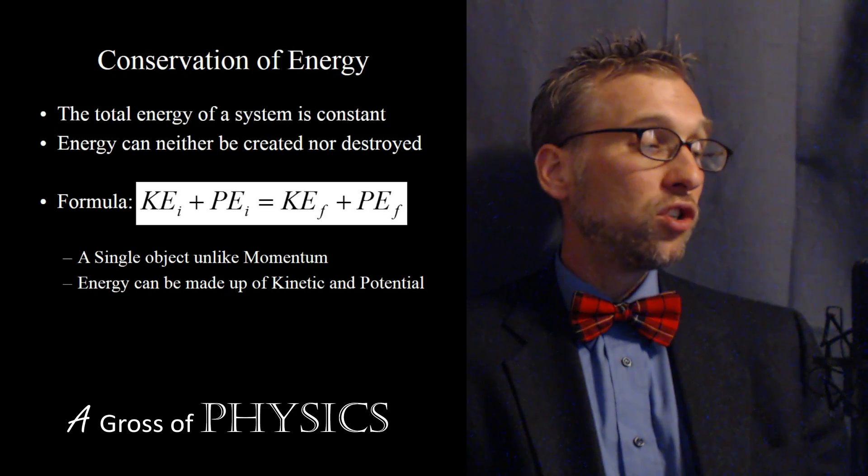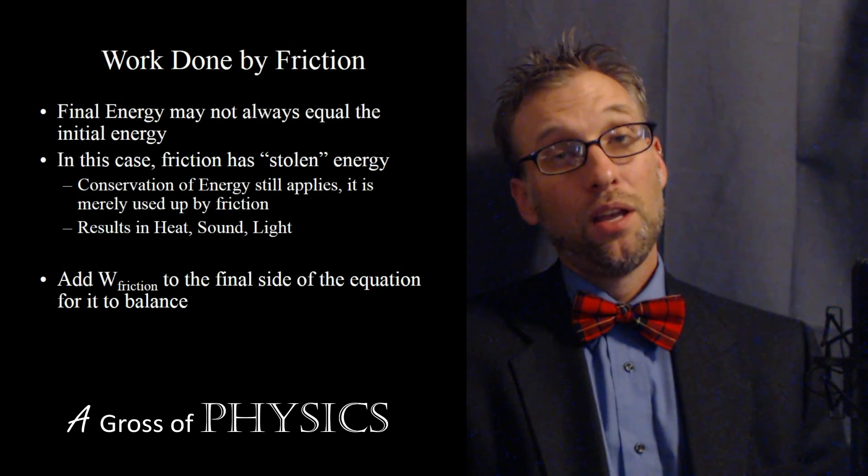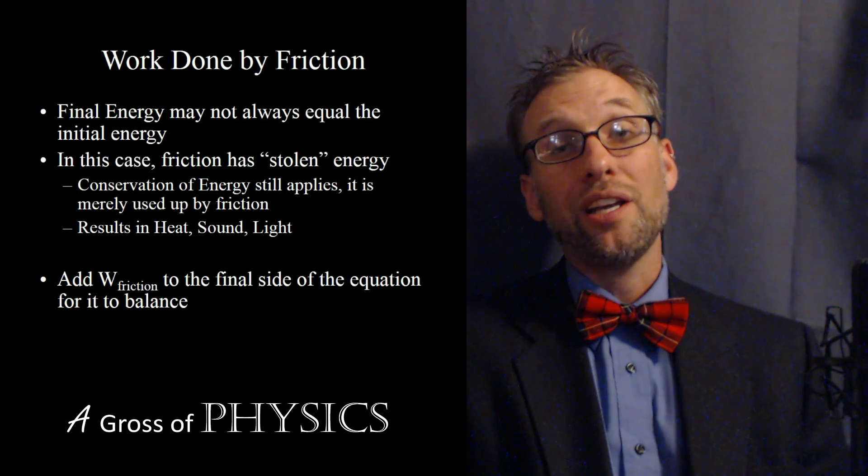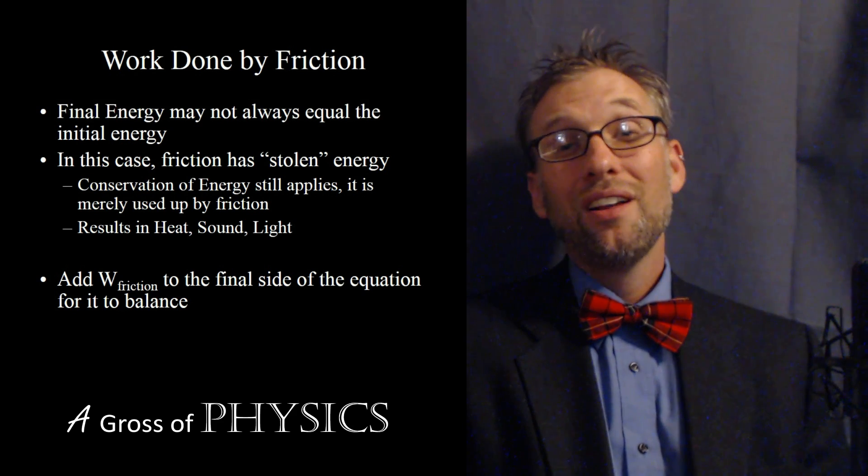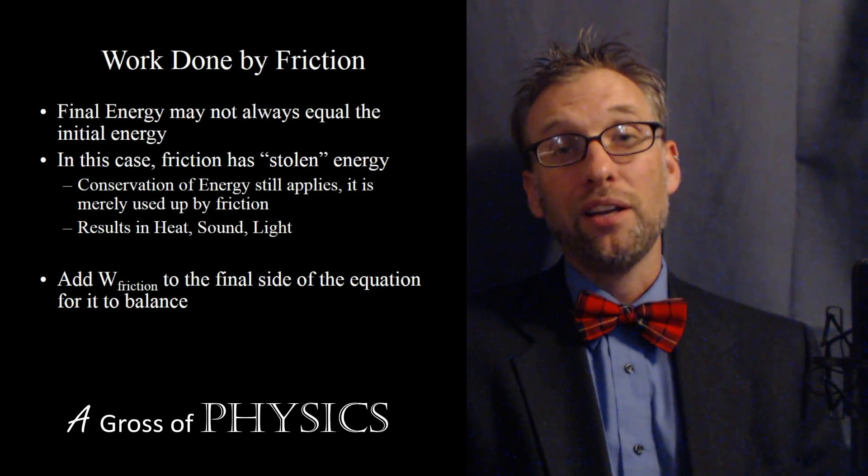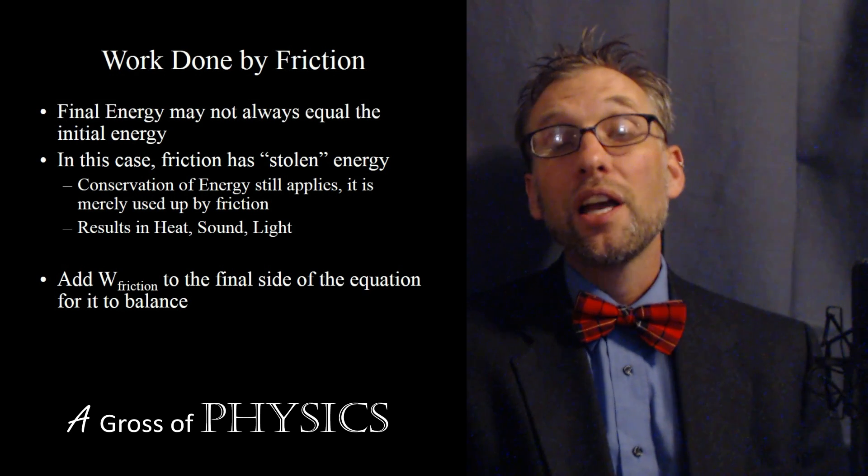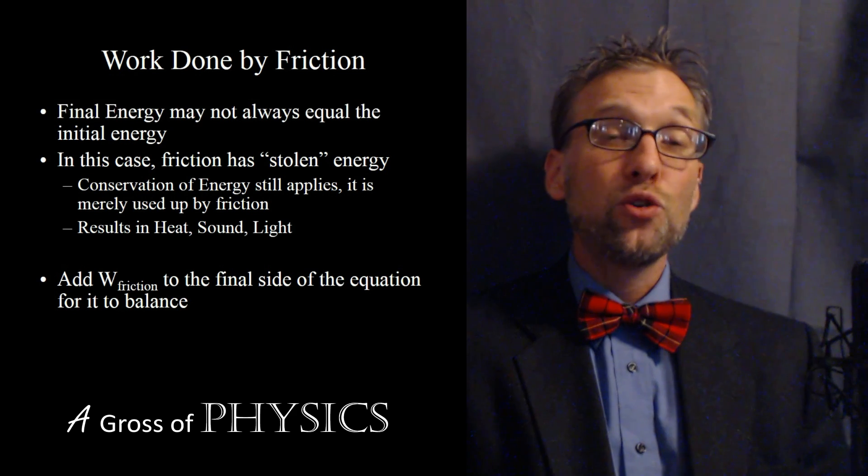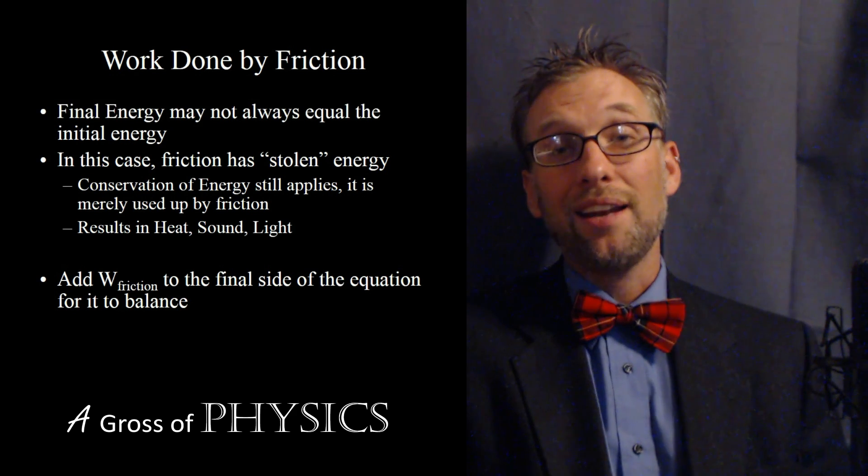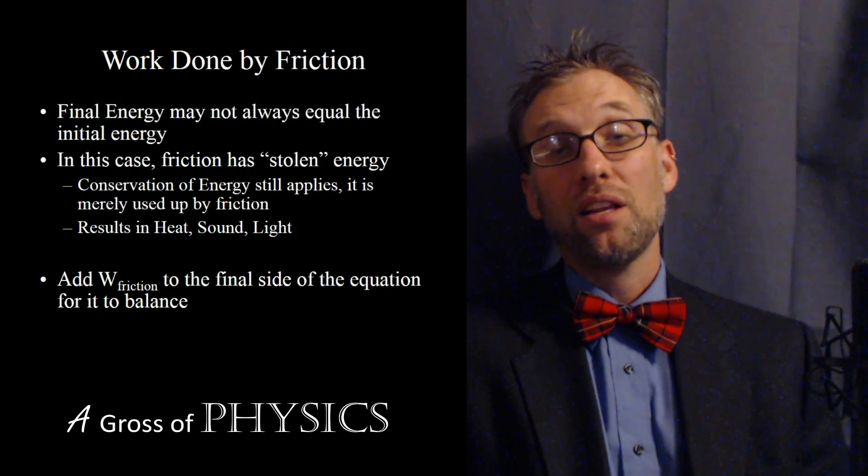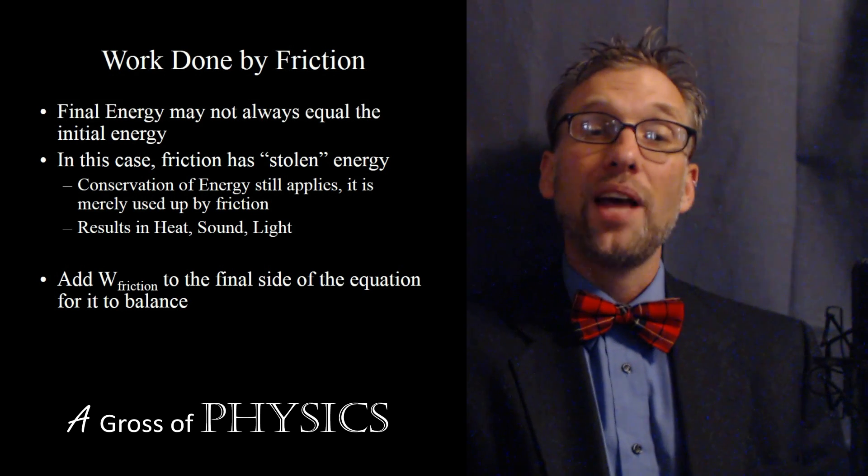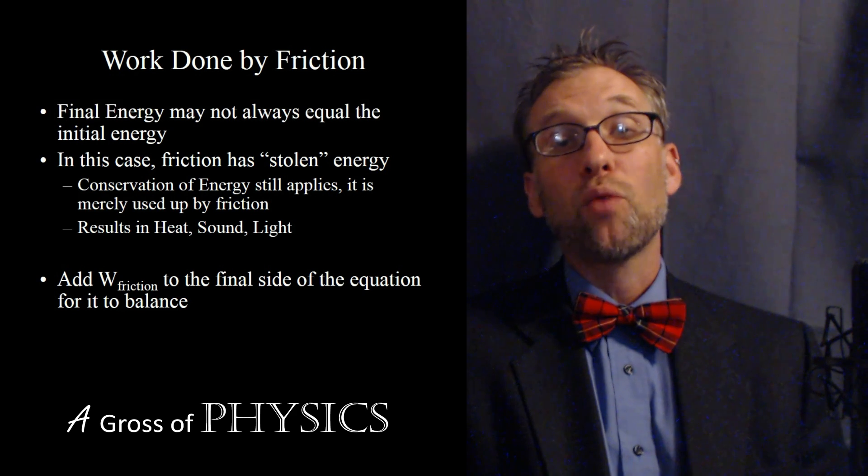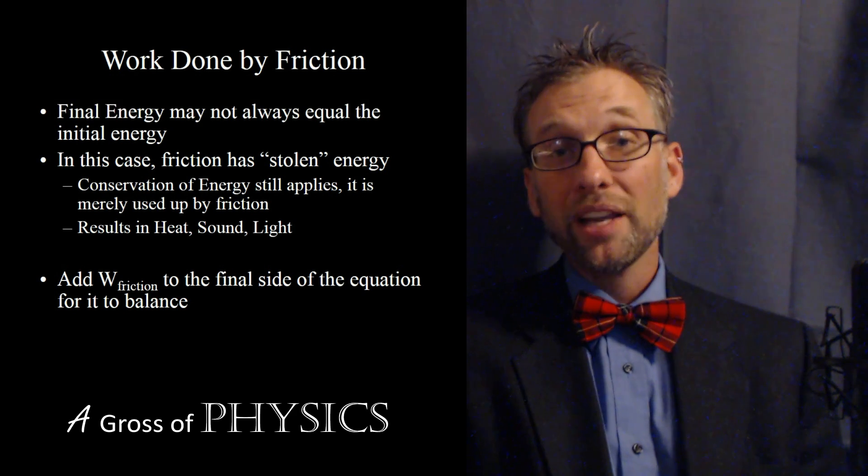Now this is, of course, assuming that we don't have any friction. If friction is involved, we have a different problem. And that's the fact that the initial energy is always going to be greater than the energy at the end because friction stole some energy. In fact, friction did work in order to steal that energy. So what we're going to have to do if we had ten joules at the beginning and eight joules at the end is add the extra two joules to the right side of the equation. And the way we're going to do that is by adding the work done by friction.